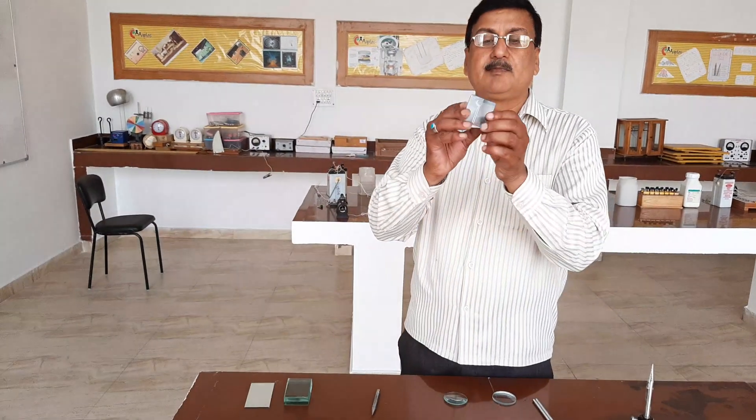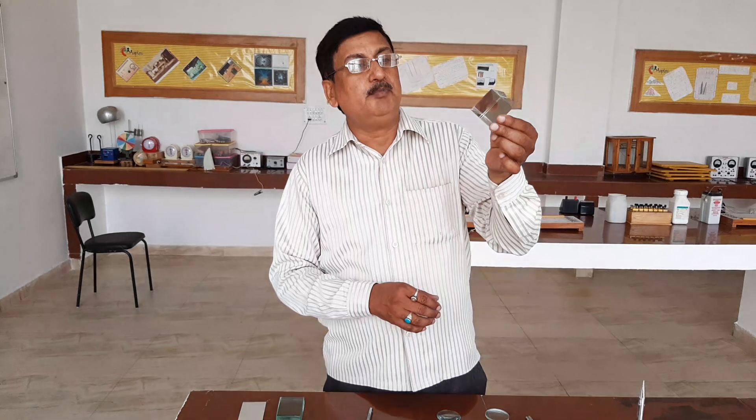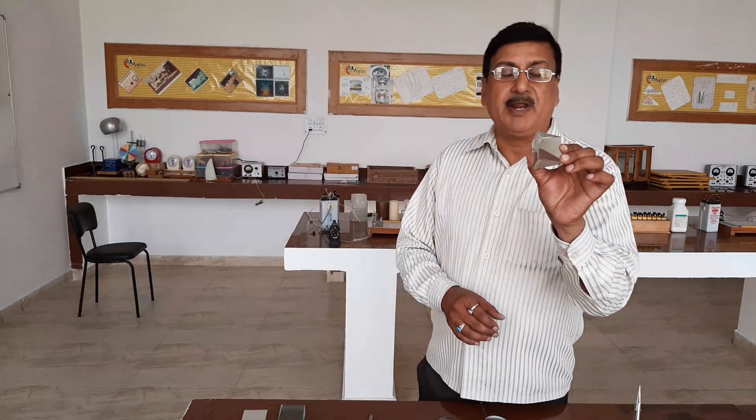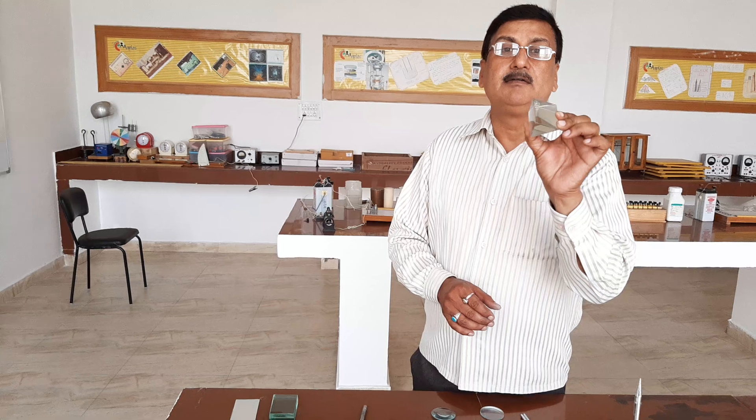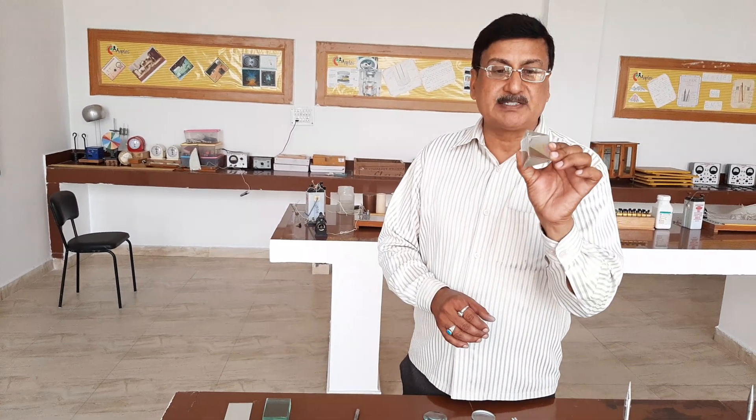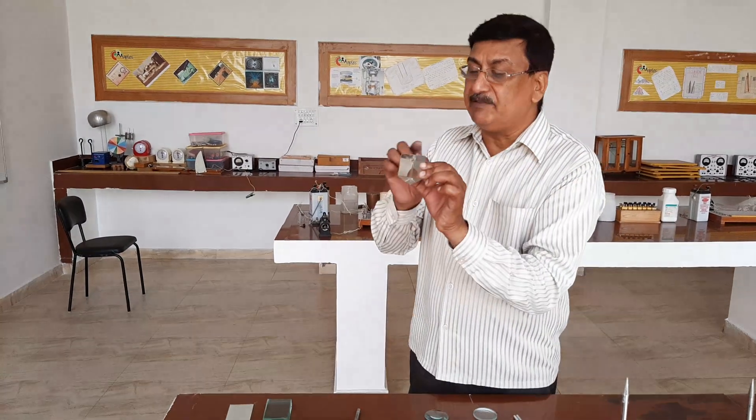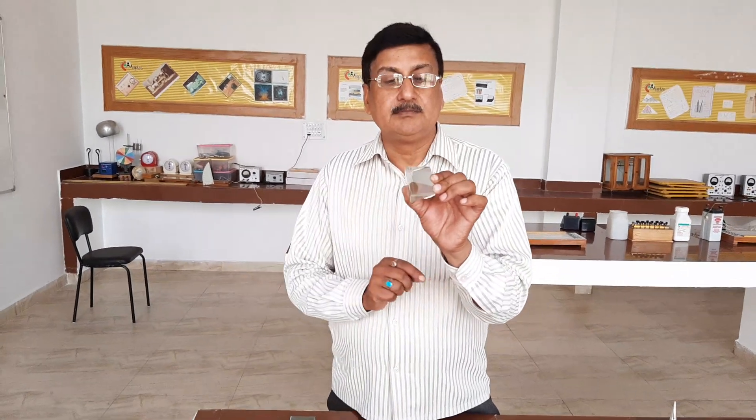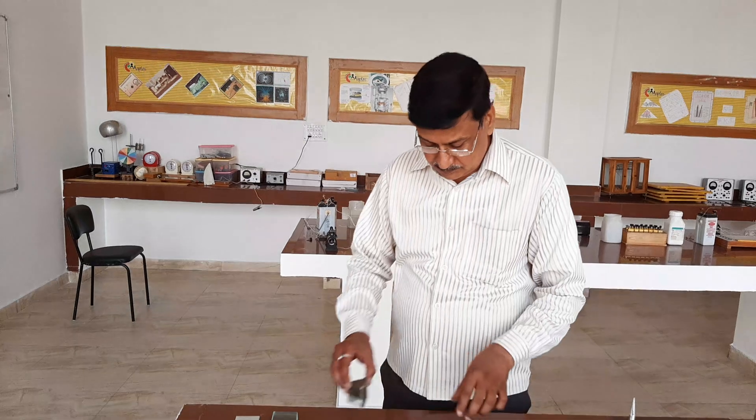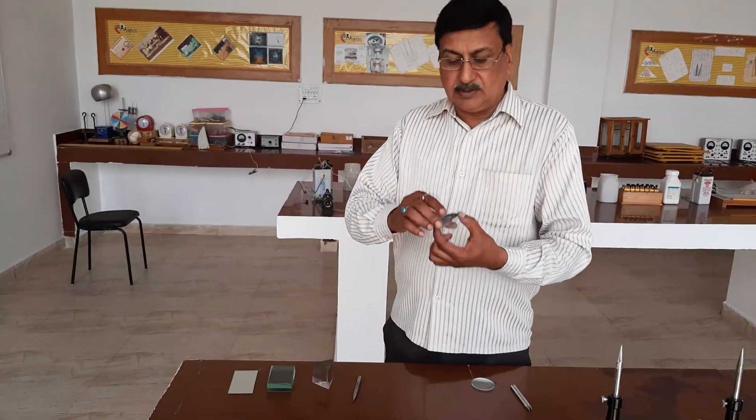This is the prism. Prism breaks white light into seven colors - this phenomena is called dispersion. And it also deviates the optical ray towards the base when entering the prism.